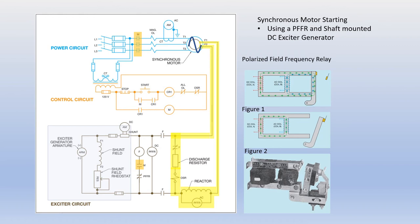The DC exciter mounted on the shaft of the motor will begin turning and creating a DC voltage output. This will create current in the DC coil of the polarized field frequency relay. The combined DC voltage across the PFFR DC coil and the induced current in the AC coil will cause the polarized field frequency relay to pull in and the normally closed contact to open, as shown in figure one on the right. This will cause the F contactor to remain open as the DC exciter accelerates, so no DC current will be applied to the motor's rotor at this time.